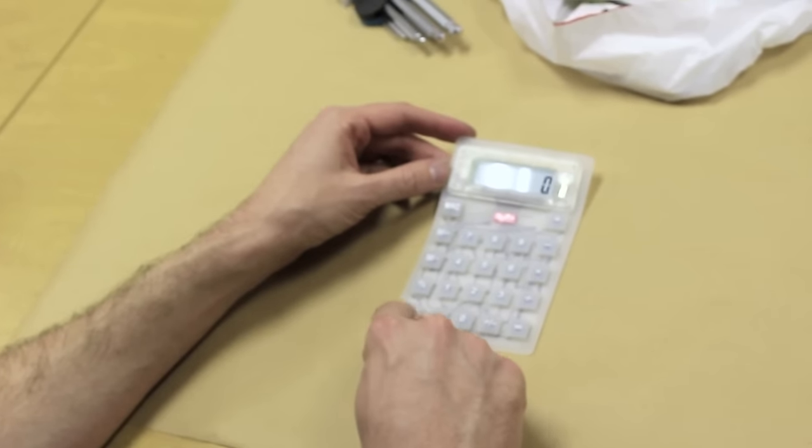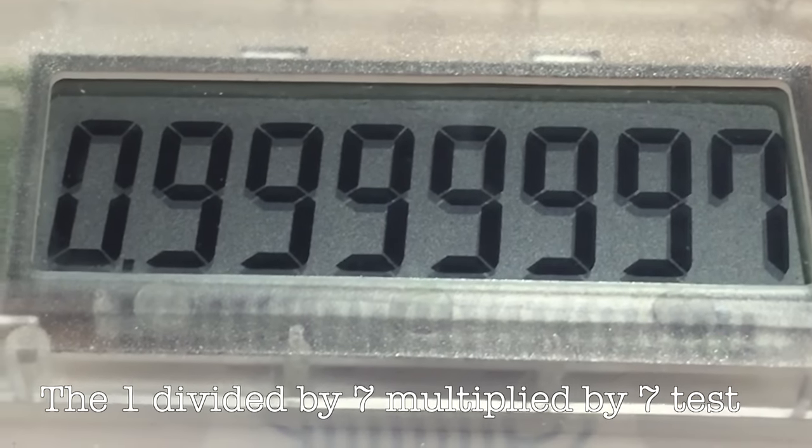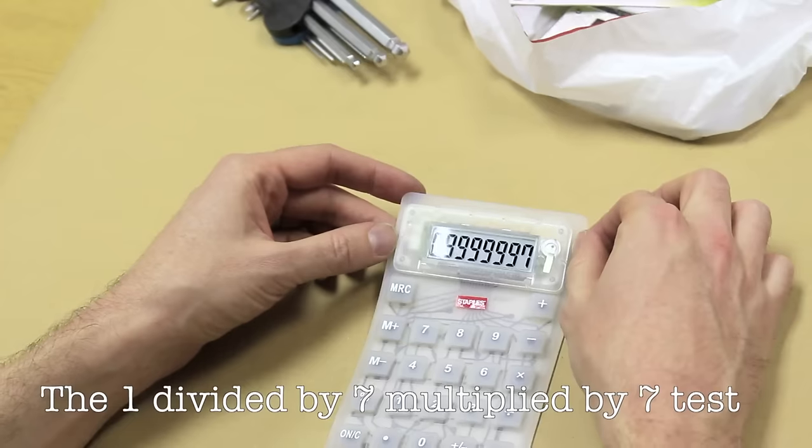And I assume, let's just check, one divided by seven equals a bunch of numbers, times seven equals. Oh okay, so there's some rounding errors going on in there, but that's, I mean,